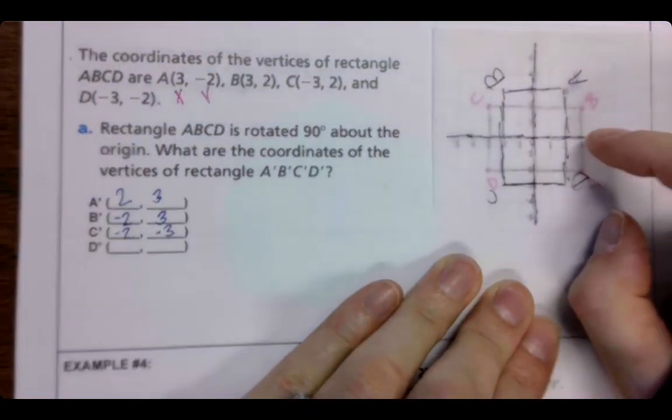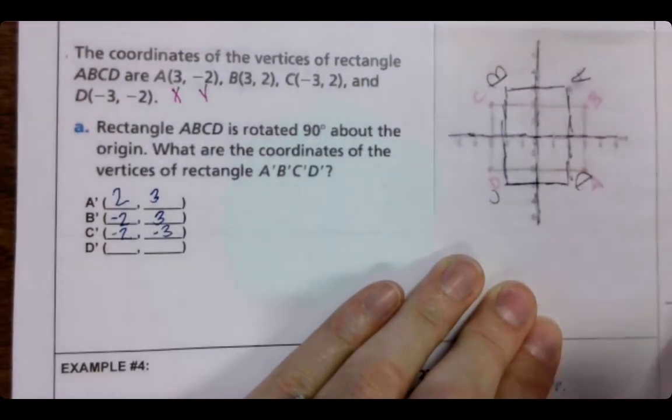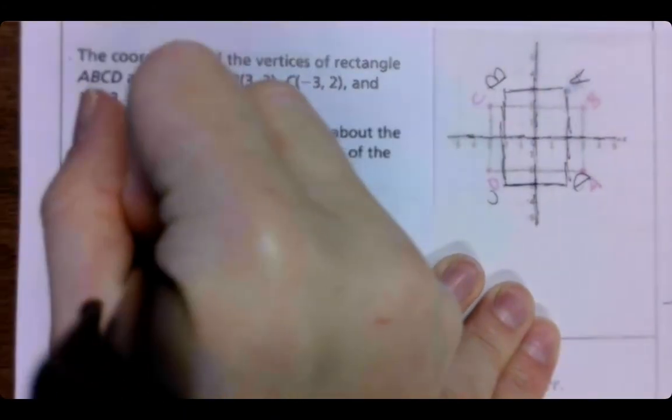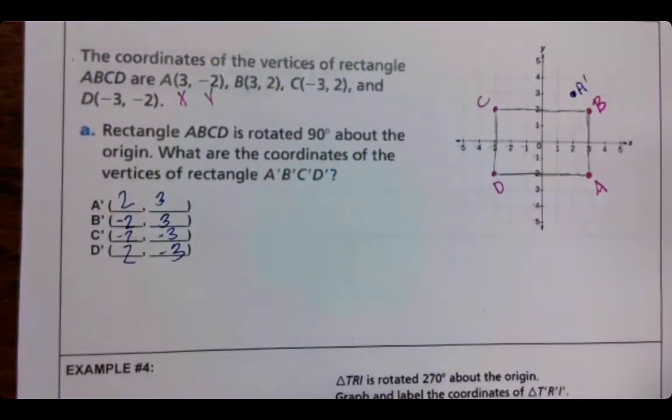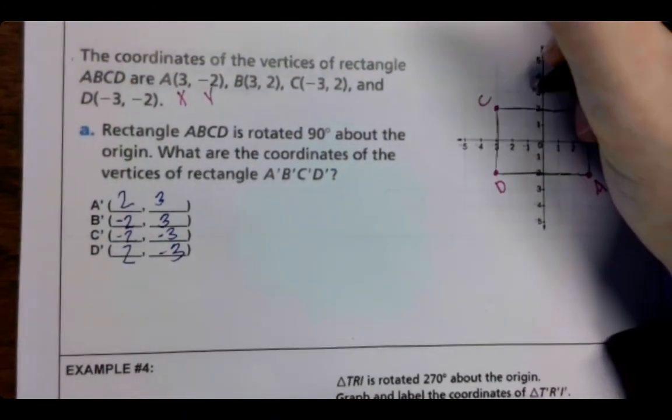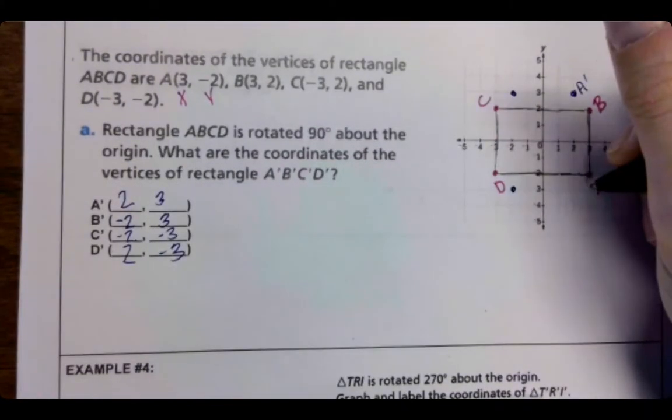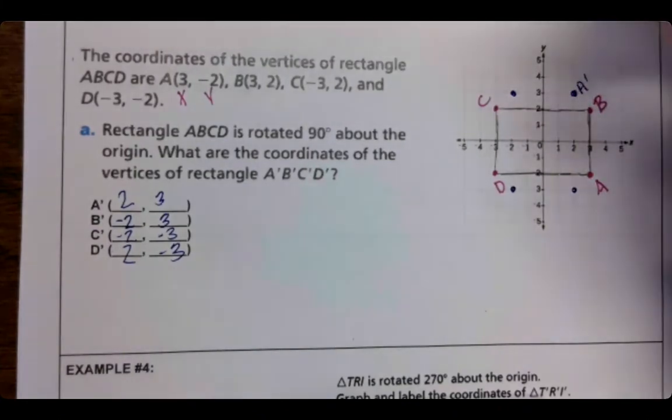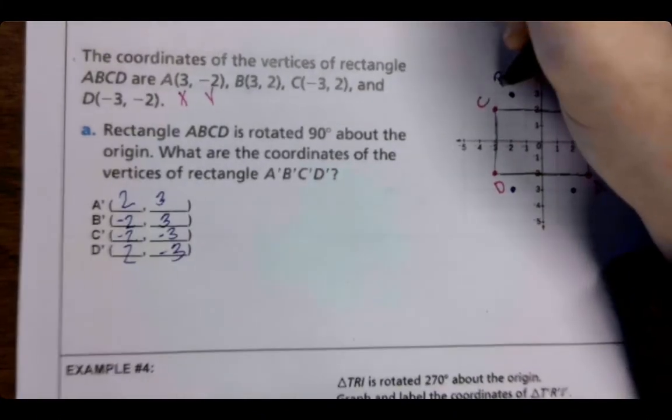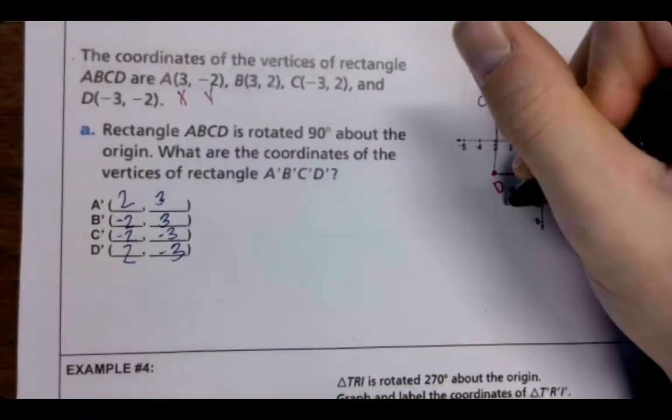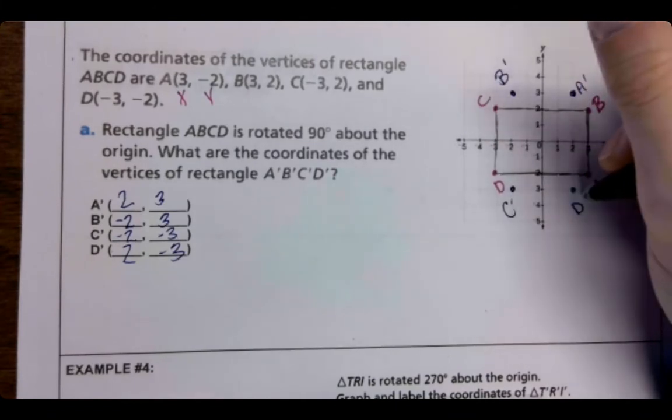And A prime, or I'm sorry, D prime is at 2, negative 3. So, this is B prime, C prime and D prime.